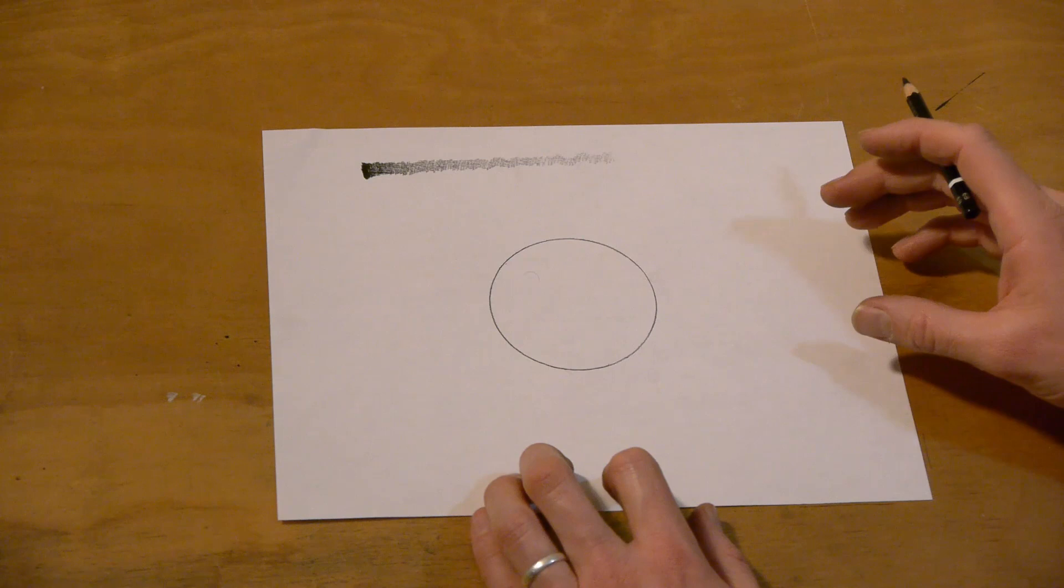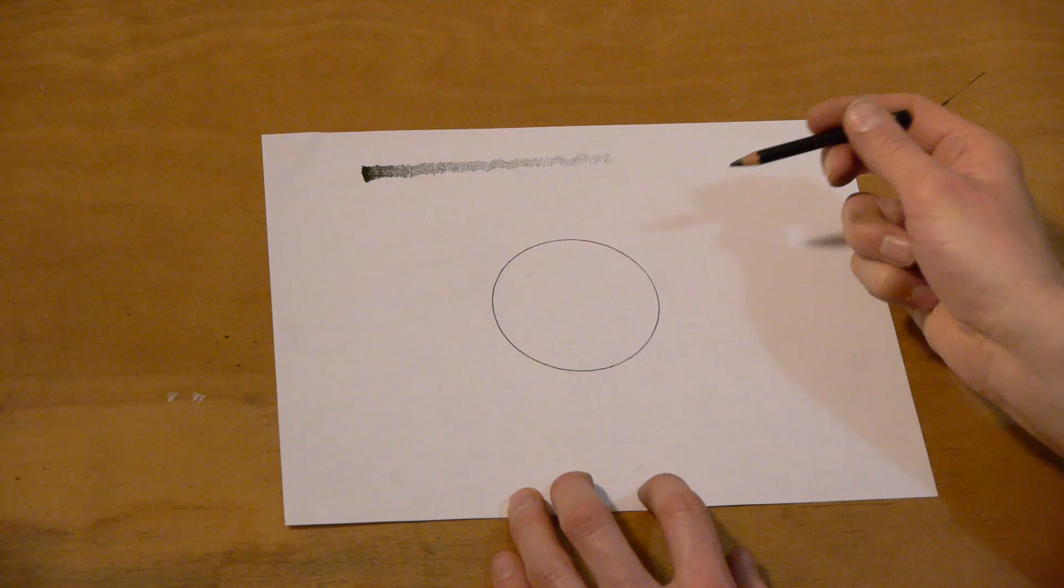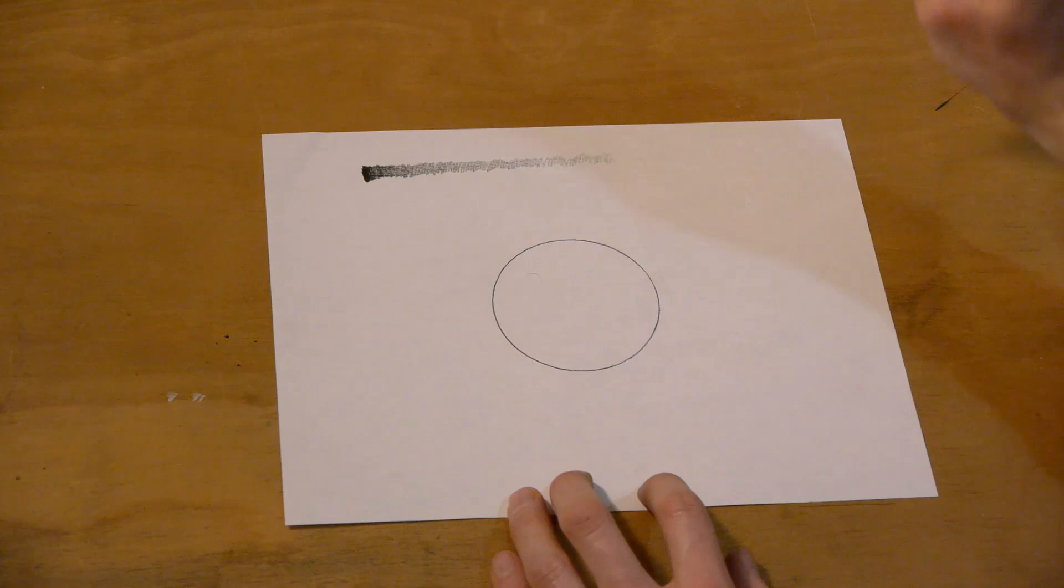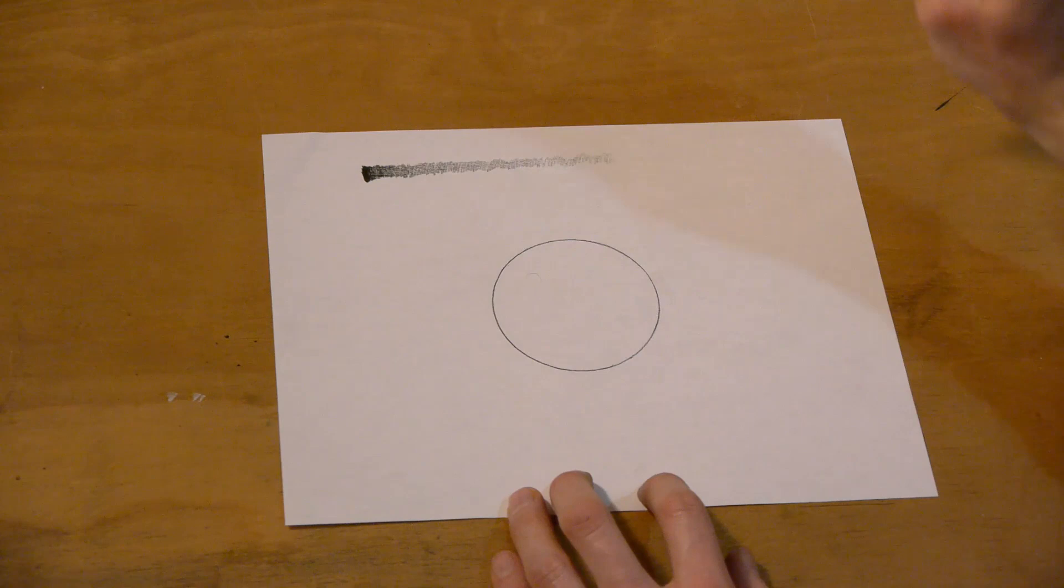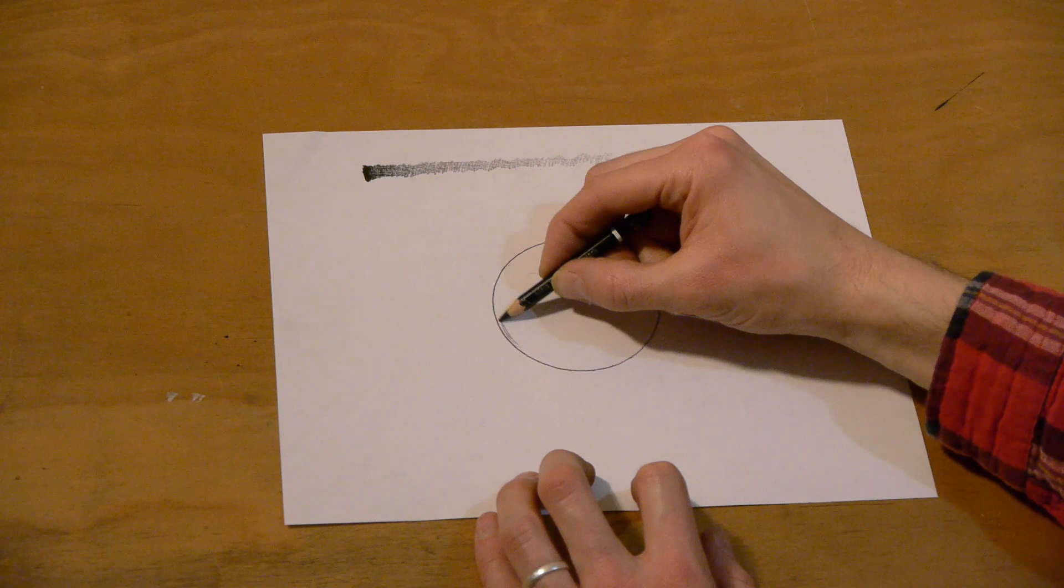First of all, we have to decide where our light source is coming from. So imagine that this circle or this ball that we're going to make is in a room and there's a light in the room. And I'm going to decide that light is coming from this side. So that side where the light is, that part is going to be just white. That's going to be the white of the paper. We're going to pretend it's a very strong light. So then our gradation is going to start on this side. That's the side we're going to do the shading on. The shadow is always on the opposite side of the object as the light source.